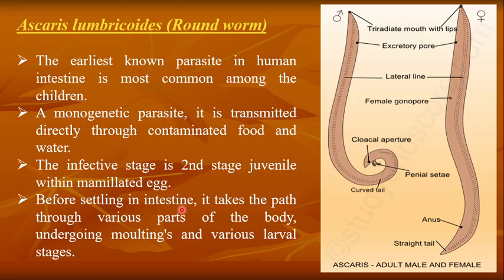When a human being is infected with Ascaris, the path is through the digestive tract. From there, it travels through various parts of the body undergoing moltings — developmental stages where the first larval stage converts to the second, second to third, and third to fourth.